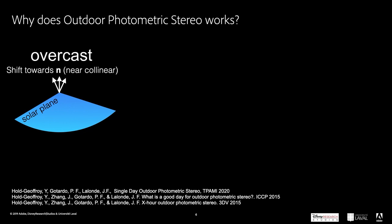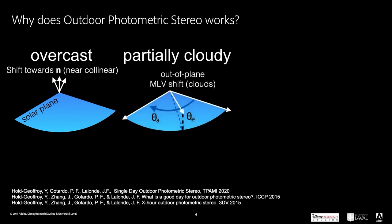Analyzing the behavior of the mean light vector throughout the day helps us understand what makes outdoor photometric stereo work. In this work, we show that overcast days cannot help photometric stereo as the mean light vectors always point roughly towards the zenith. In contrast, partially cloudy days provide enough shift in the mean light vectors so existing photometric stereo methods can work in this case.